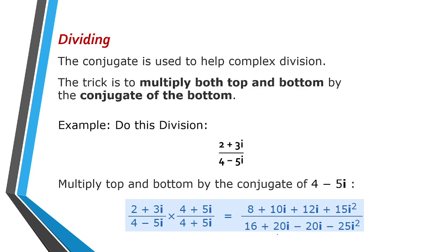Dividing. The conjugate is used to help complex division. The trick is to multiply both top and bottom by the conjugate of the bottom. So example: do this division (2+3i)/(4-5i). So multiply the top and bottom by the conjugate of the denominator. What is the conjugate of 4-5i? It's 4+5i. So multiply the numerator by 4+5i and the denominator by 4+5i. Then we apply the previous knowledge about multiplying complex numbers. We have 8+10i+12i+15i² over 16+20i-20i-25i².